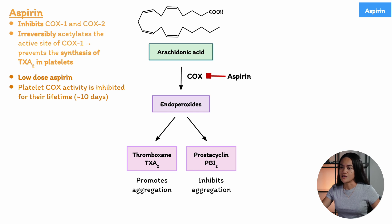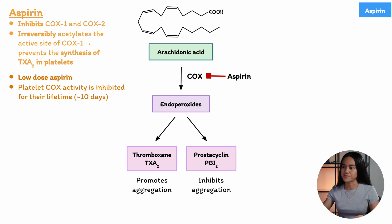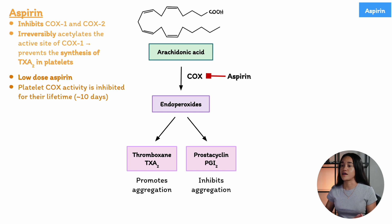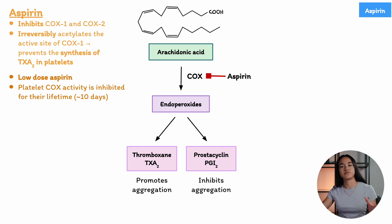This irreversible inhibition of cyclooxygenase is really important for distinguishing the different effects of aspirin. It has important consequences for how long aspirin exerts an antiplatelet effect and also impacts upon the dose required to produce an antiplatelet effect. Earlier, we talked about how the dose of aspirin used for antiplatelet effects is much lower than the dose used for anti-inflammatory and analgesic effects. Low-dose aspirin is commonly used as a preventative treatment for patients at high risk of cardiovascular disease and myocardial infarction, and it's also prescribed to individuals who have previously experienced a heart attack, maintaining them on chronic low-dose aspirin therapy.